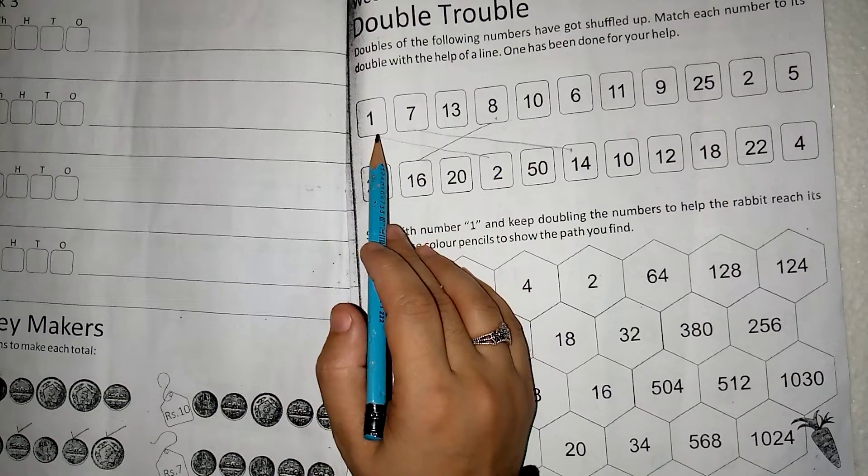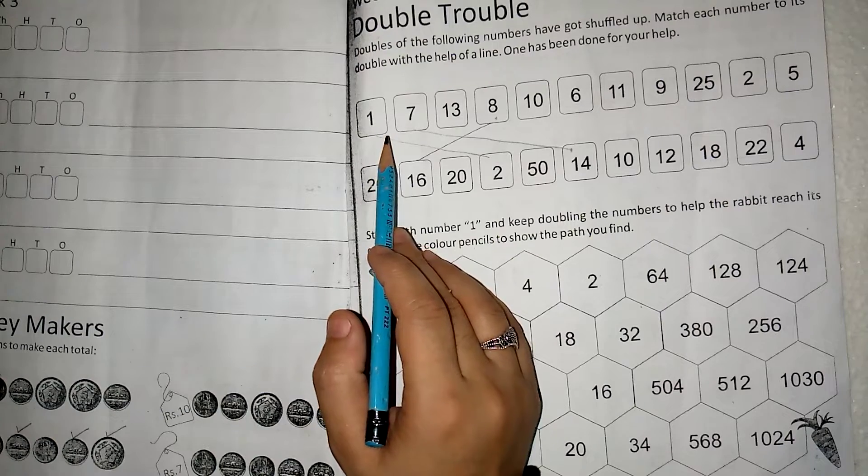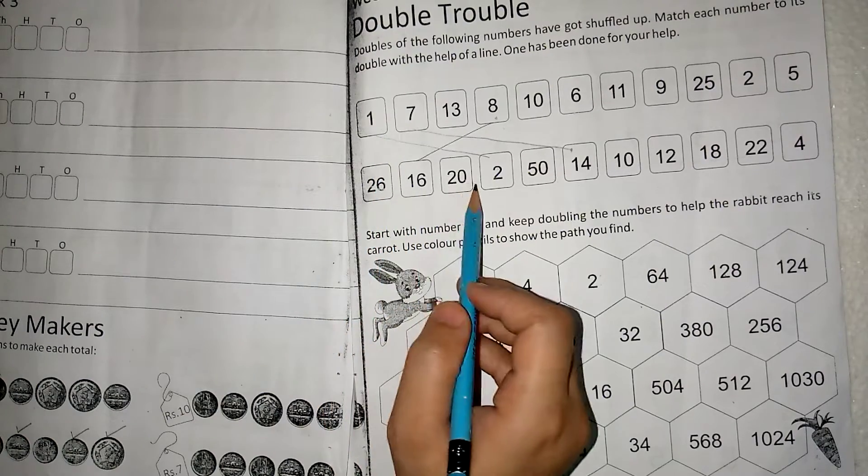You have taken a number from the first row and took a double. After the answer, you have to find a number in the second row and match it with it.